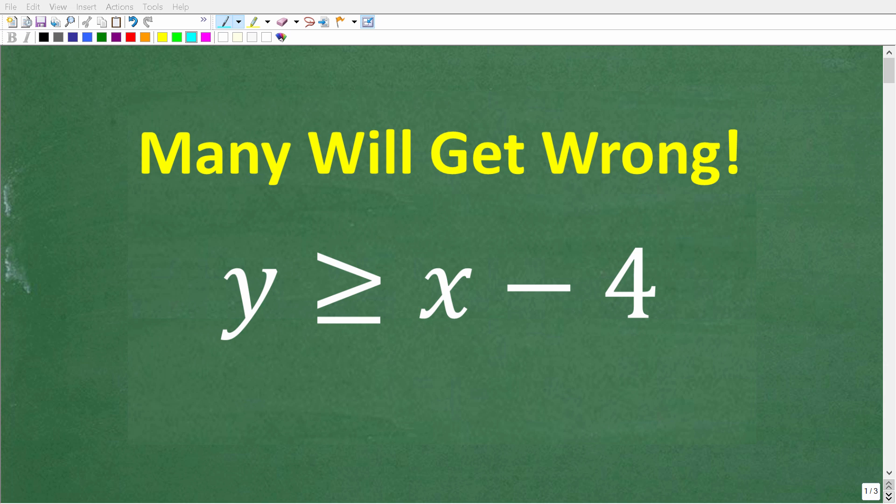All right, so let's see if you understand enough algebra to solve this two-variable linear inequality. So here is the problem. We have y is greater than or equal to x minus 4. Now, the solution to this inequality is actually a graph. But if you think you know how to do this, go ahead and describe that graph in the comments section.